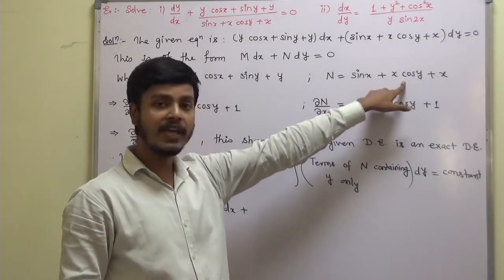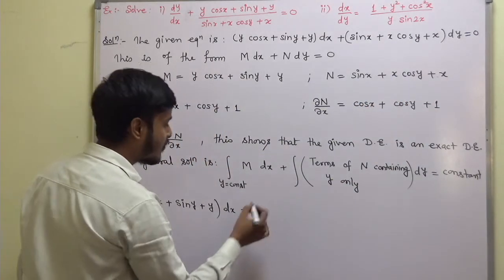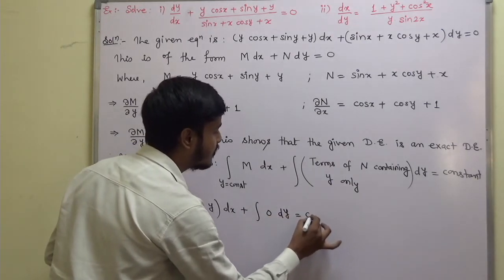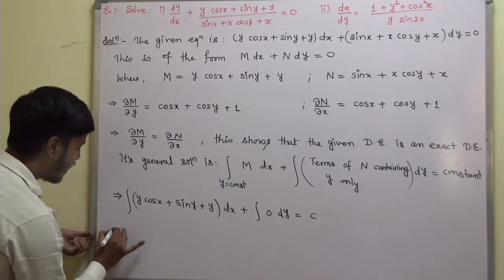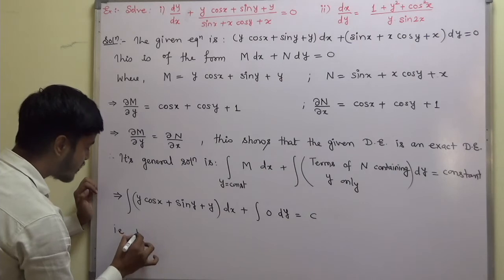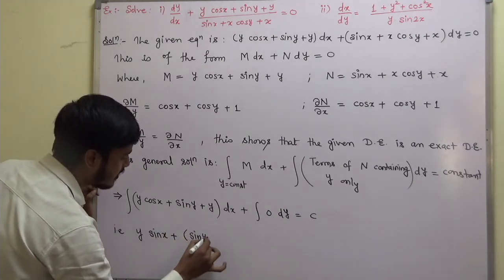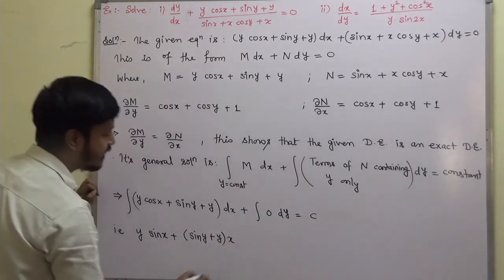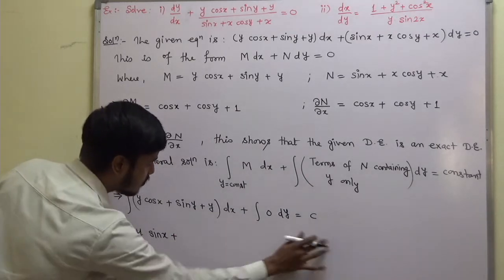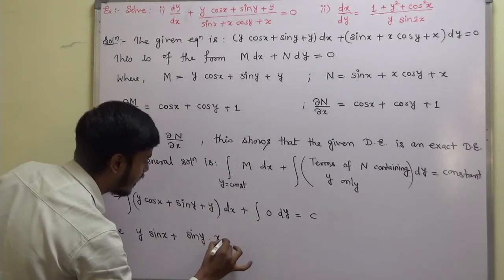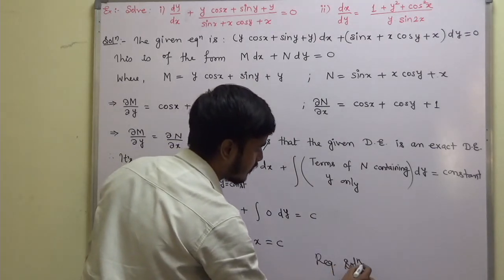Now integrate M = y cos x + sin y + y with respect to x, keeping y constant. Integration of cos x is sin x, so we get y sin x. sin y and y are constants, so integration of 1 is x, giving (sin y + y) x. For N, we check if there are terms in y only — sin x and x cos y both contain x, so there are no terms of y only. That contributes 0. The final solution is y sin x + x sin y + xy = c.